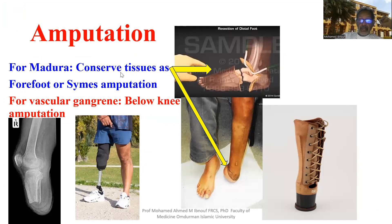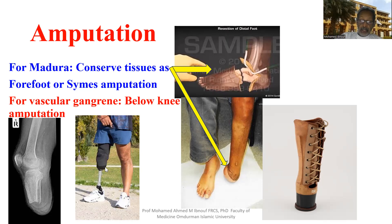For Madura foot, we should conserve tissues. If there is bone destruction, we remove any destroyed bone — we can remove the forefoot as in the previous case and leave the calcaneum and talus, like a Syme's amputation. Later, a special shoe can be worn so the patient will not limp. By contrast, in vascular gangrene and diabetics, where there are no muscles to cover the heel, we go for below-knee amputation, using the calf muscles to cover the cut edge of bone, with a longer skin flap to cover the muscles at the stump.